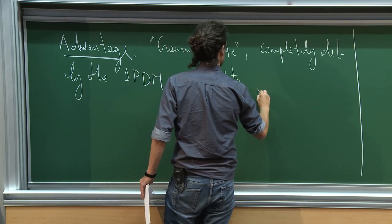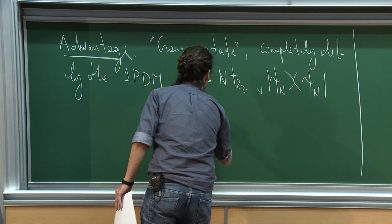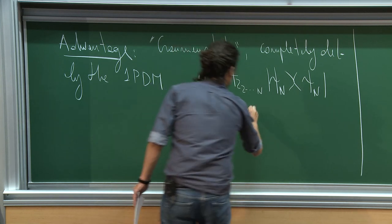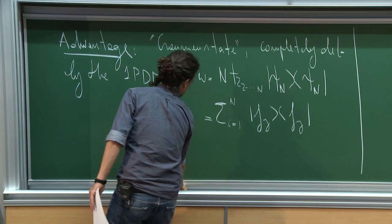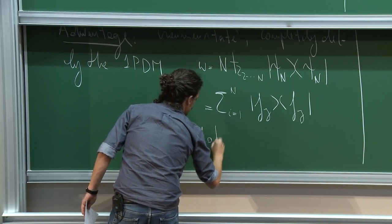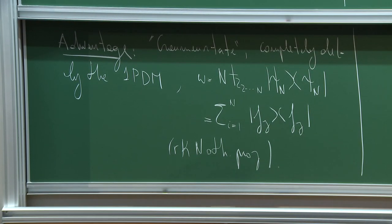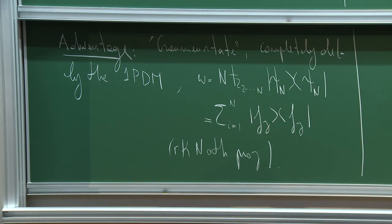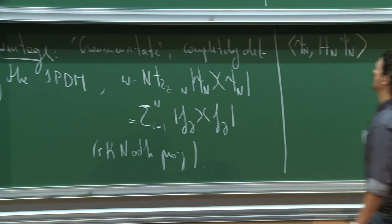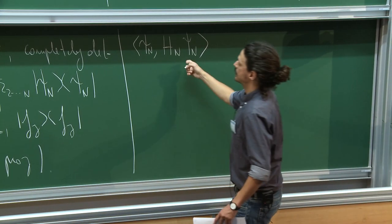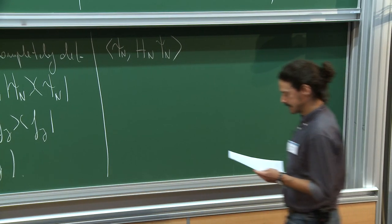The one-particle density matrix is a trace over all particles except the first of the projector over the state psi_N. For a Slater determinant, this gives a rank-N projector over the subspace spanned by the N orthonormal wave functions entering the determinant. The two-particle density matrix can be expressed in terms of the one-particle density matrix for Slater determinants.